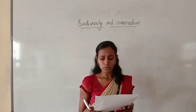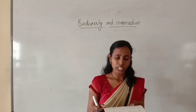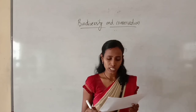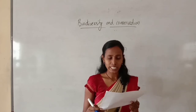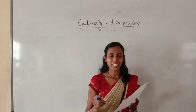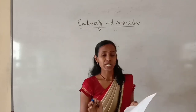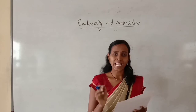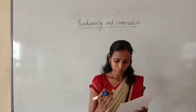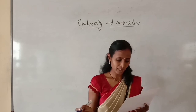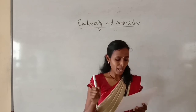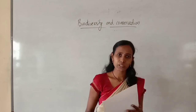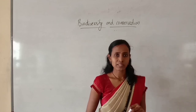Fourth question: Which of the following is a mismatch? A) genetic diversity — genus level, B) species diversity — species level, C) ecological diversity — ecosystem level, or D) none of the above. Option A is the mismatch because genetic diversity refers to variation at the gene level, not genus level. Species diversity at species level and ecological diversity at ecosystem level are both correct. The remaining questions are an assignment for you, and this completes today's class.